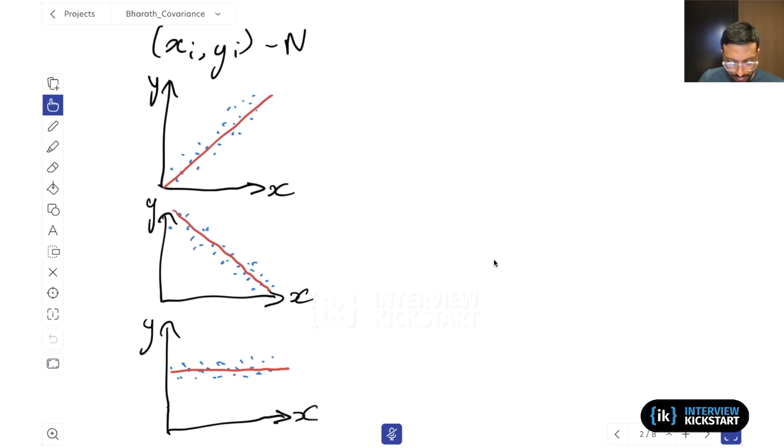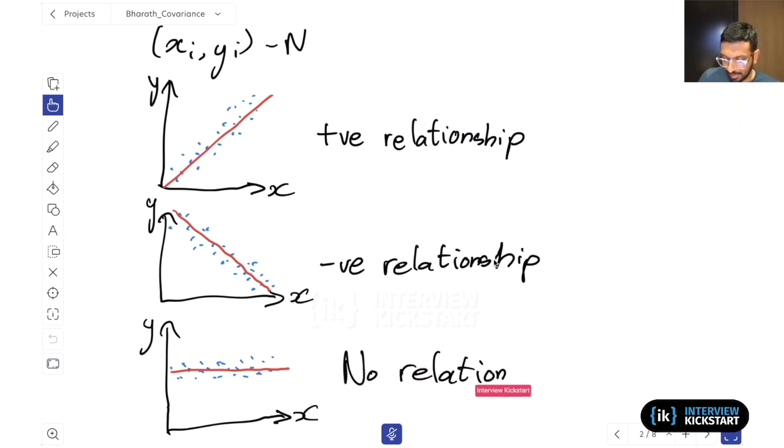So in each of these cases over here, we say that there's a positive relationship. In this case, we say that there's a negative relationship. And in the final case, we could just say there's no relationship between x and y.